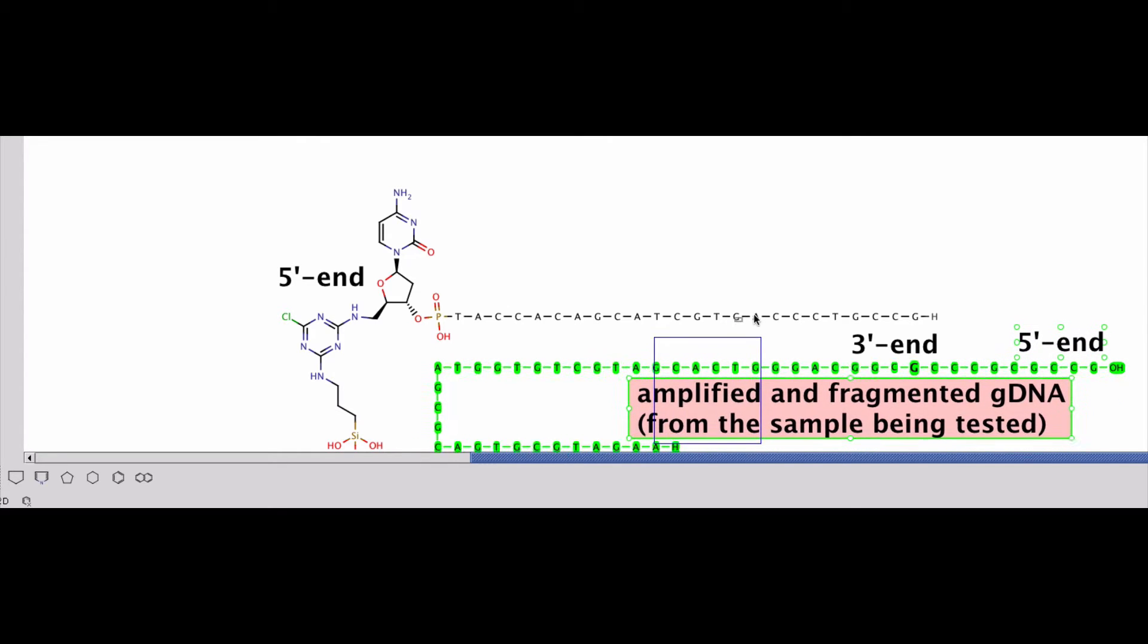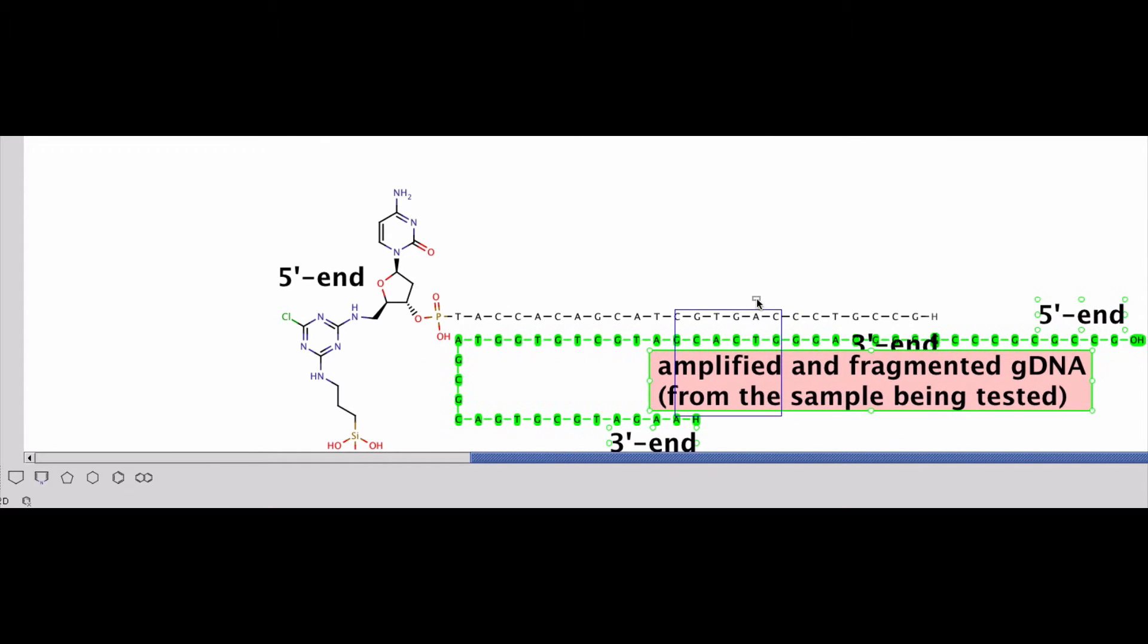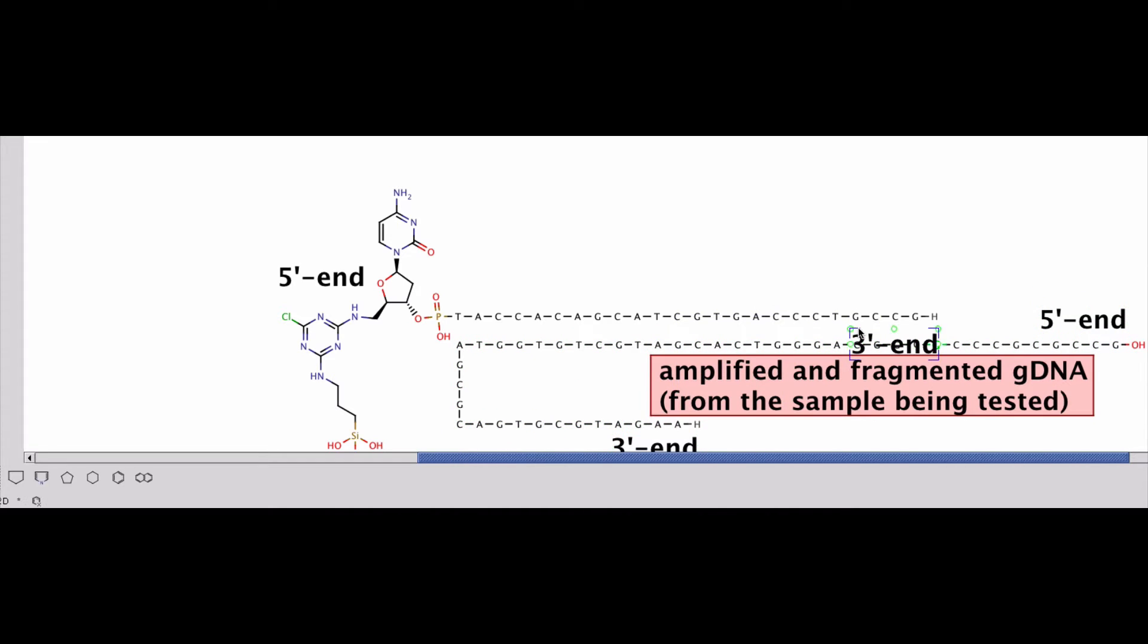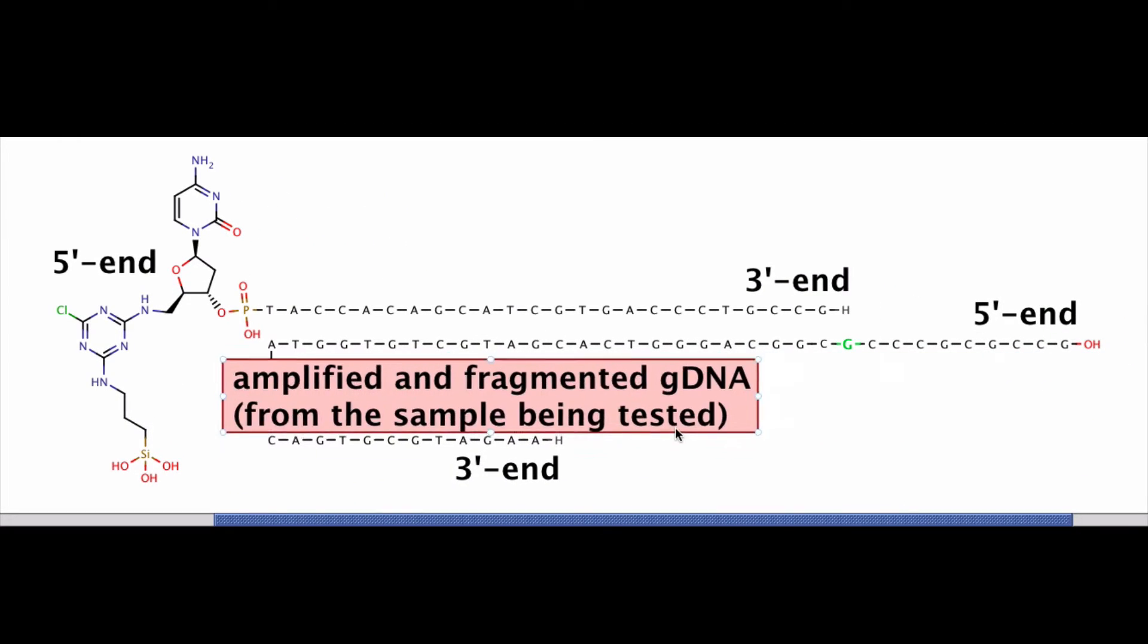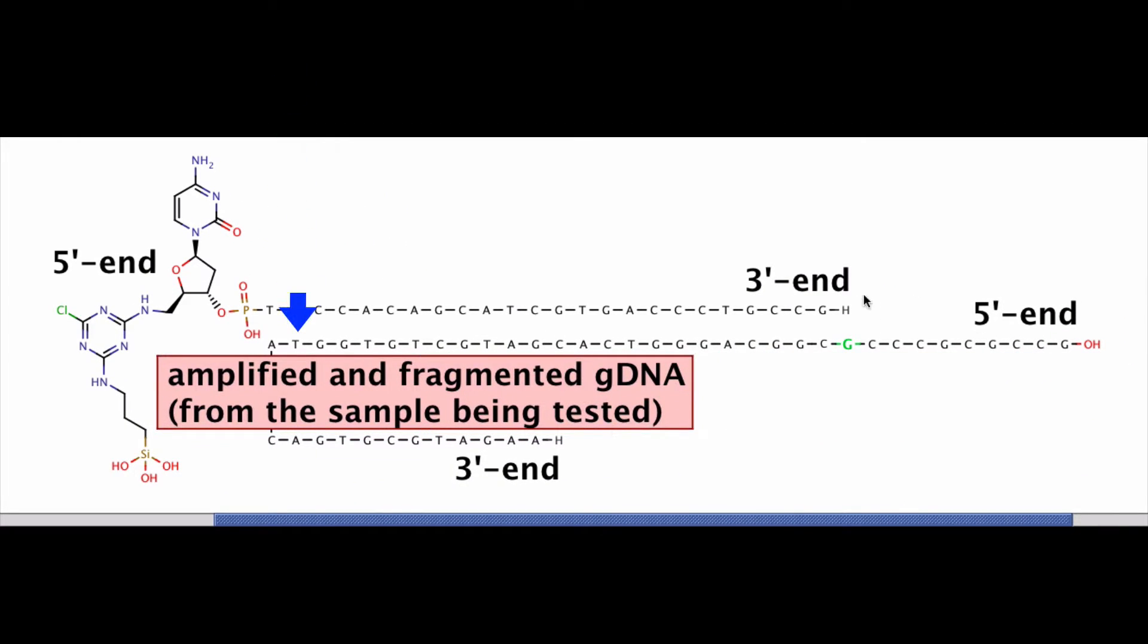Hybridization will follow the base pairing rules to match that fragment of genomic DNA up against our probe sequence. You can see there's perfect base pairing between our probe and our sample DNA.